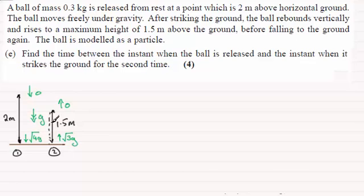So what I'm going to do is split this up into two sections. I'm going to look at the time it takes to fall to the first bounce and then I'm going to look at this second diagram here where I'm just going to work out the time it takes to go from the ground with a speed of root 3g up to instantaneous rest.